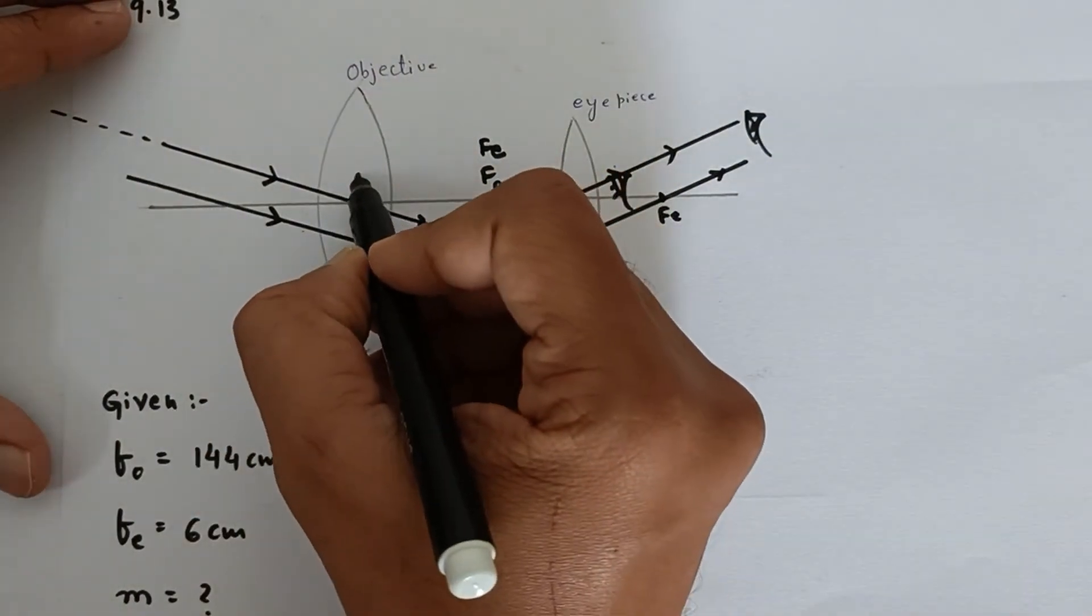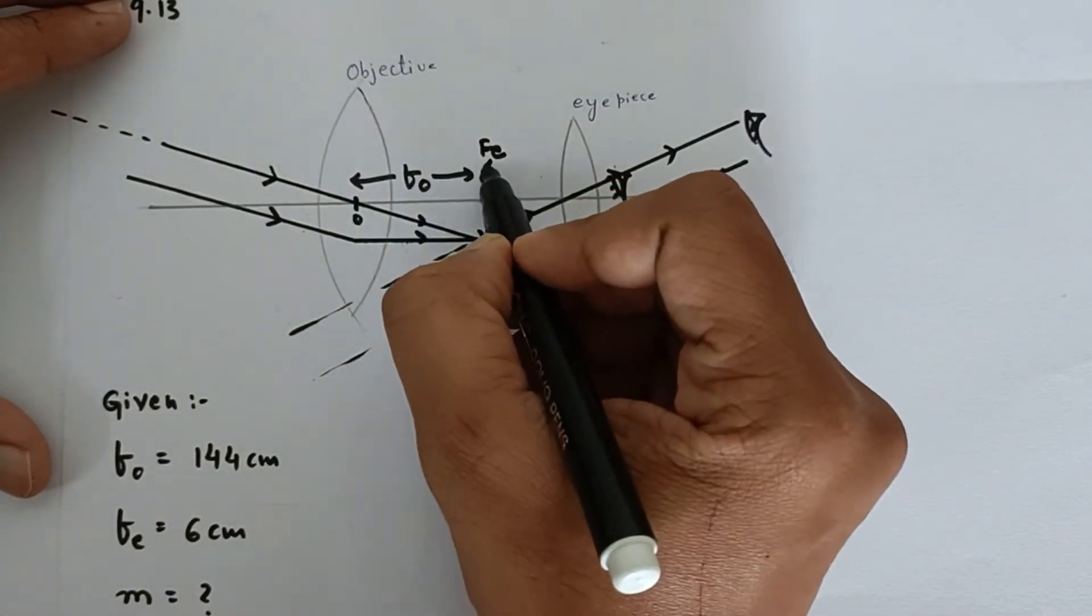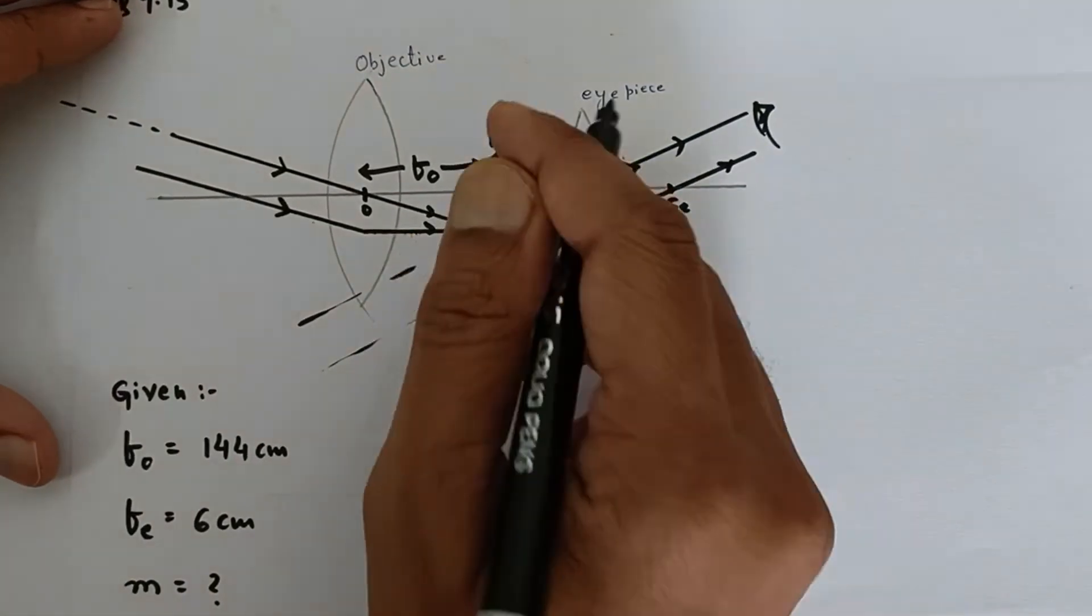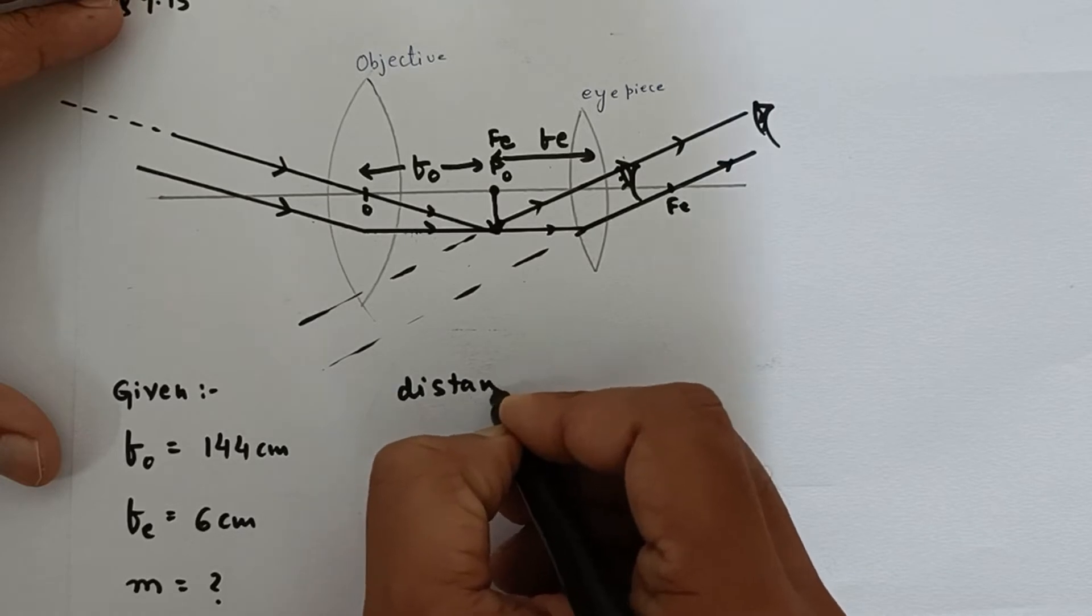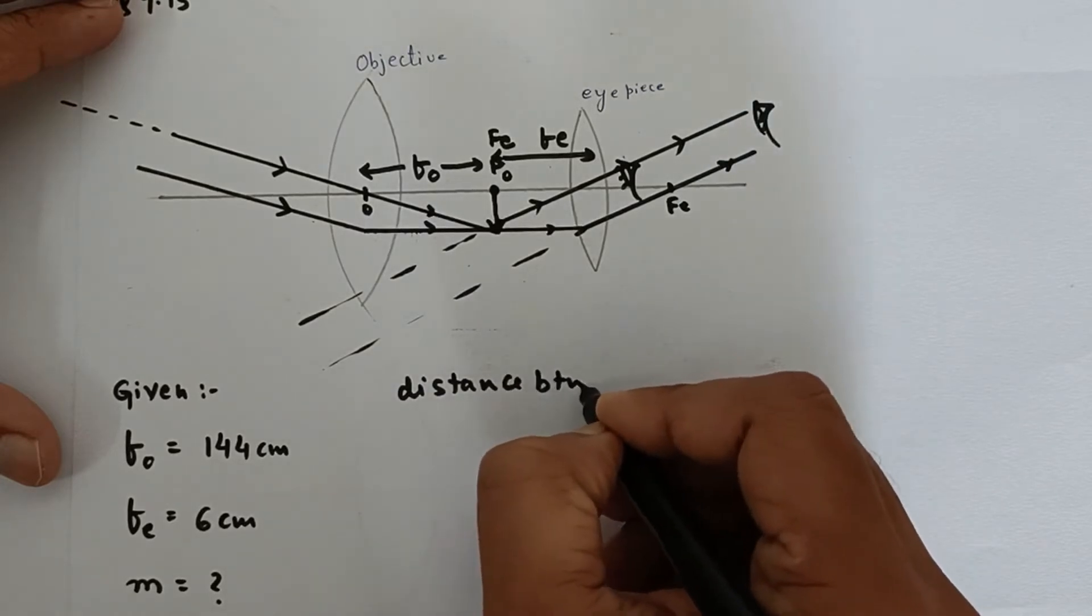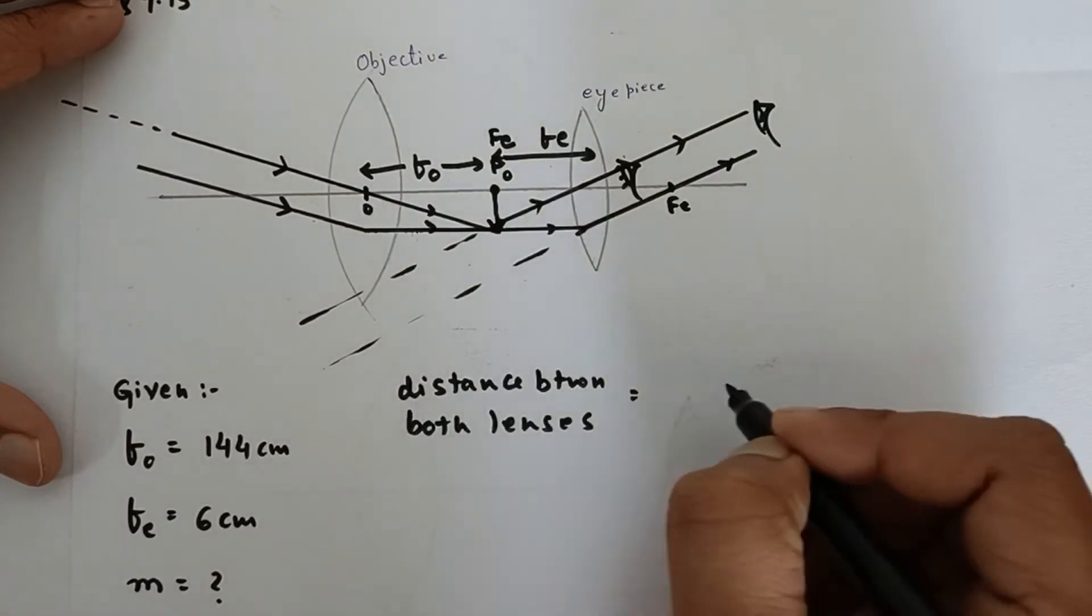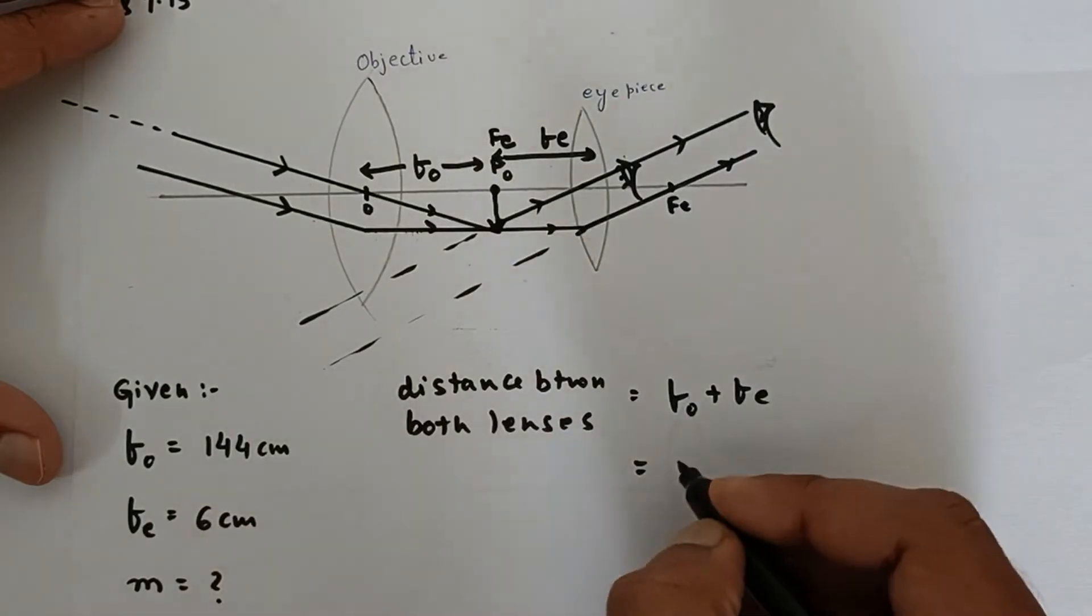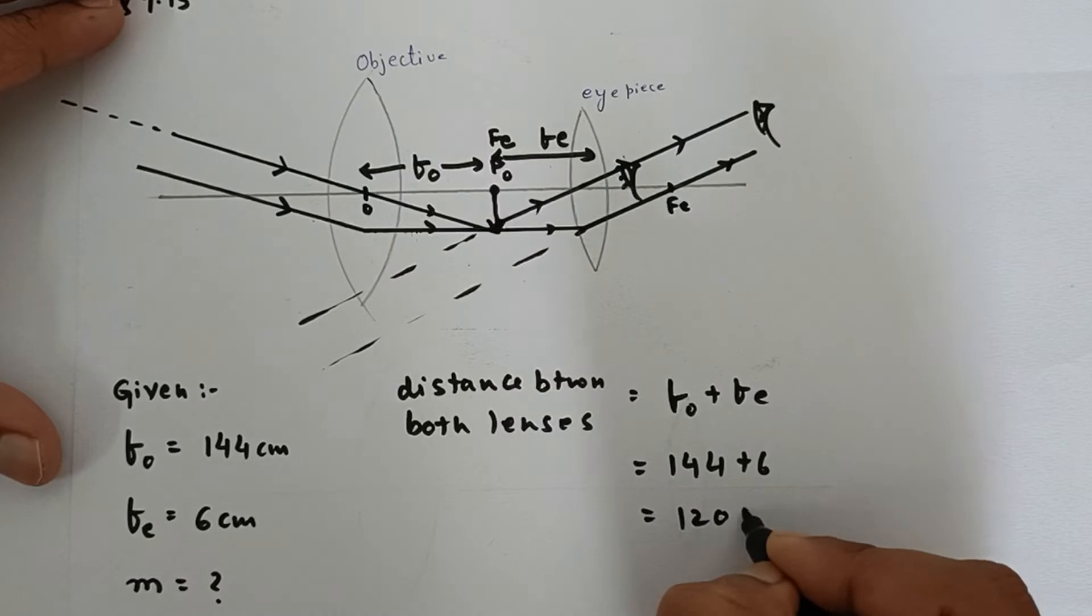Now in this case, the distance between both the lenses: this is fo, and from here to this point, this distance is fe. So the distance between both lenses is equal to fo plus fe, which is given as 144 plus 6, that is 150 centimeters.